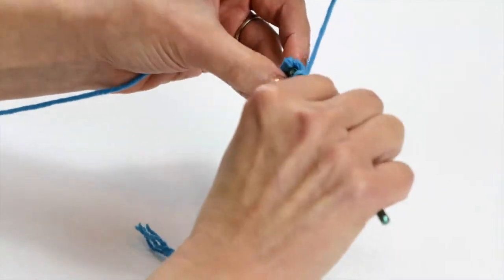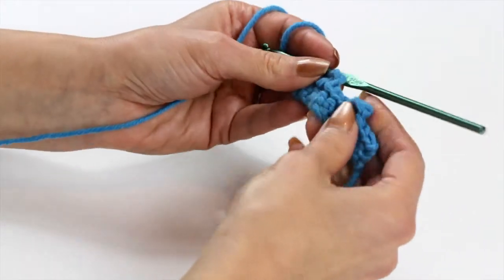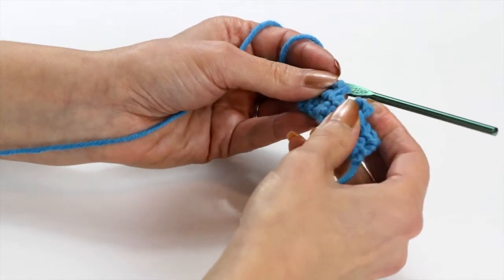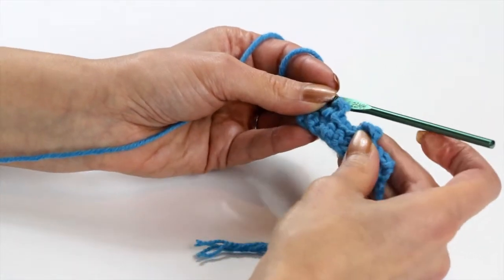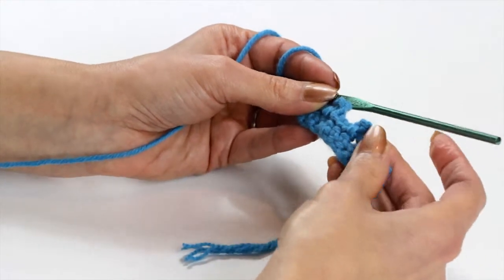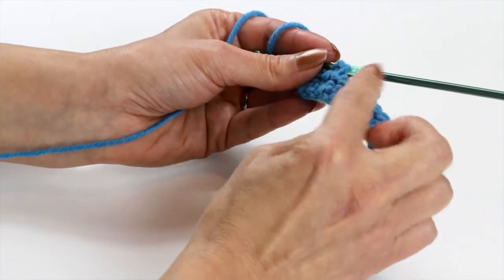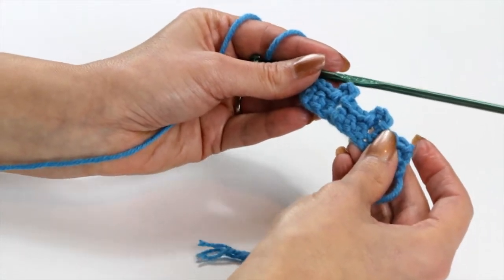The picot stitch, which is basically just three chains, you can also do four or five chains if you want a taller picot, but it just is slip stitches and chain stitches to create an edging to your work.